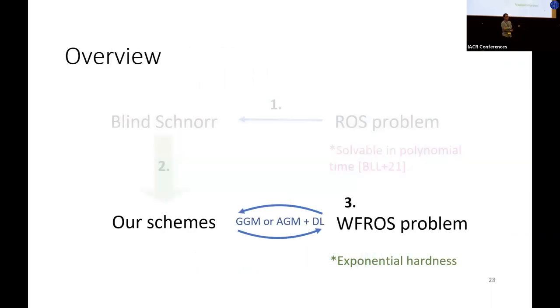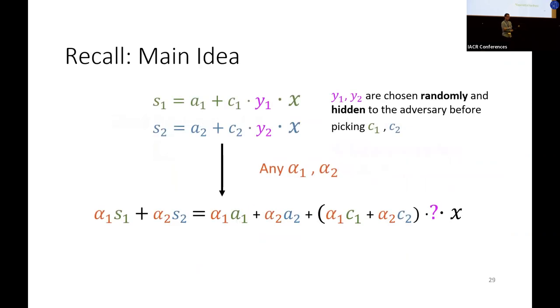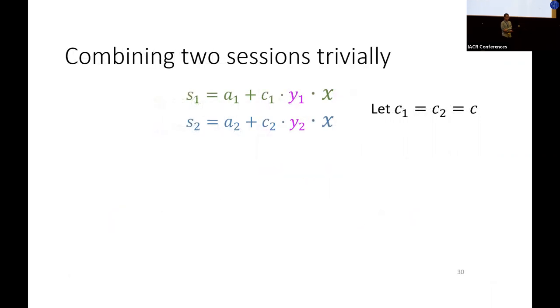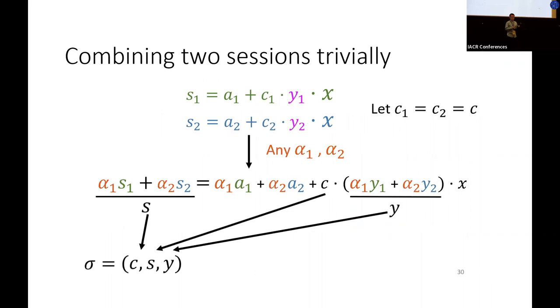Finally, I would like to convey some ideas behind how we define WFROS and why it is hard. Recall that our main intuition was that in our construction, it's not possible to combine two sessions linearly to get a signature. However, actually, there are other ways that one can combine two sessions. For example, a trivial way is that we can set both c_1 and c_2 to just be c. Then we can linearly combine these two equations to get a signature.